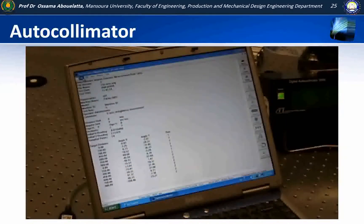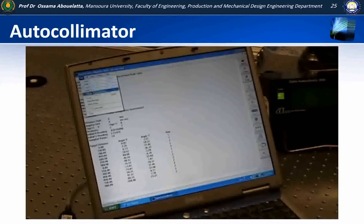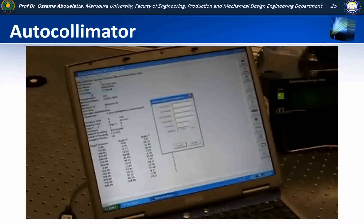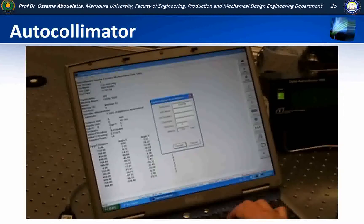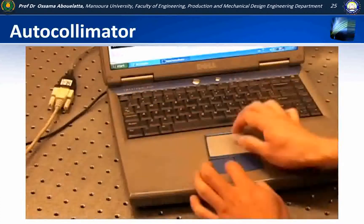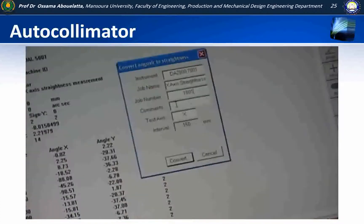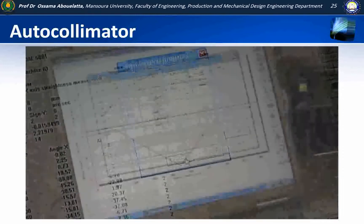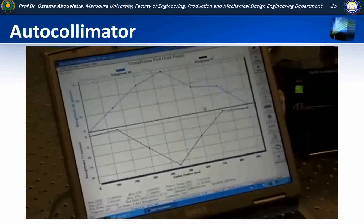Saved measurement data may be viewed in report format or printed using the Open Data File function. To determine straightness, the measurement data needs to be converted from angular measurement data. We go to the File menu or the Toolbar Open icon to open the saved report, then select the Angular to Straightness option from the File menu. Finally, we click the Convert button to perform the data conversion, and the straightness graph is generated on the screen.